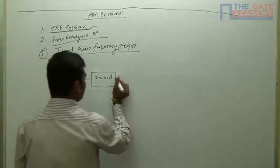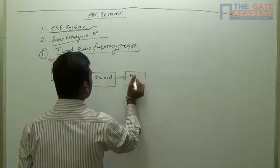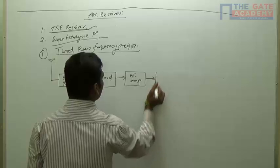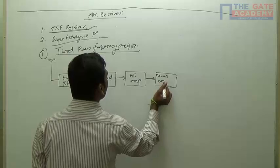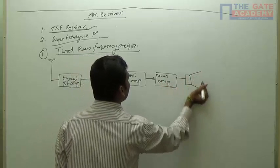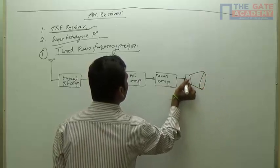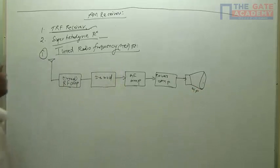Next is AF amplifier, power amplifier. Next is the destination output. This is loudspeaker.